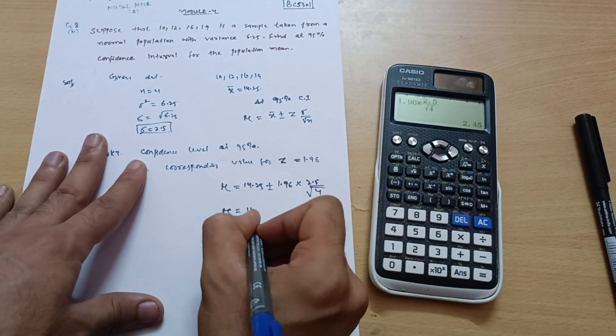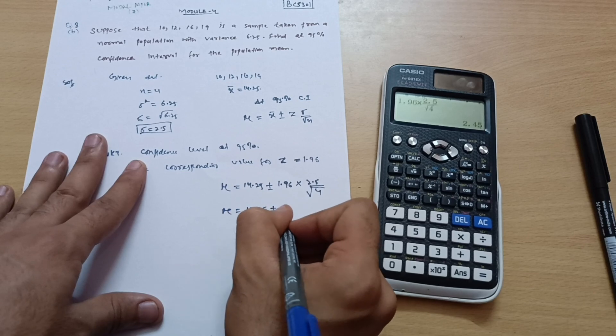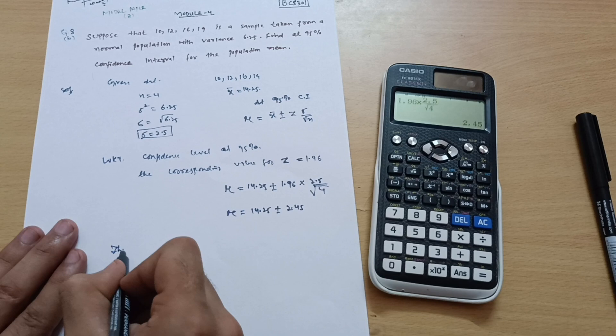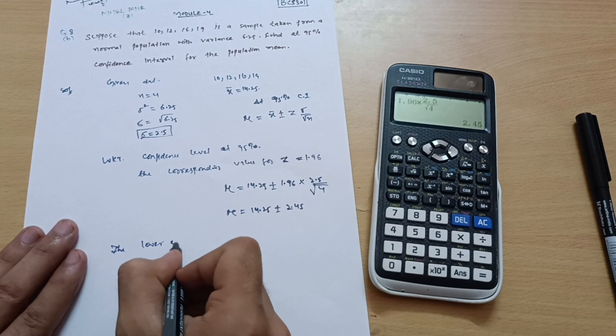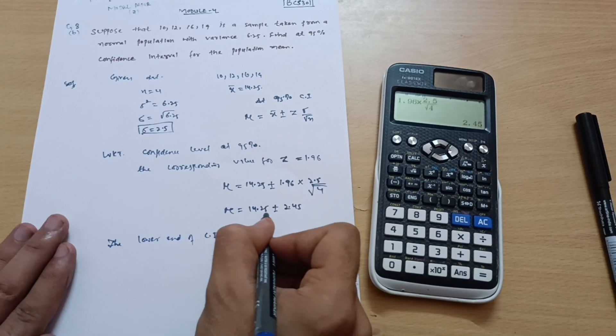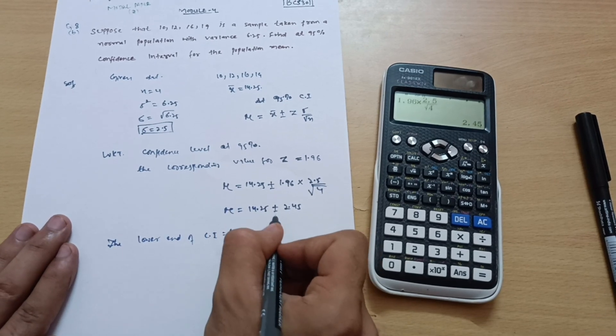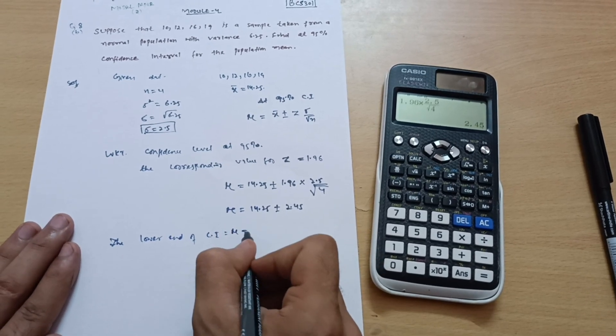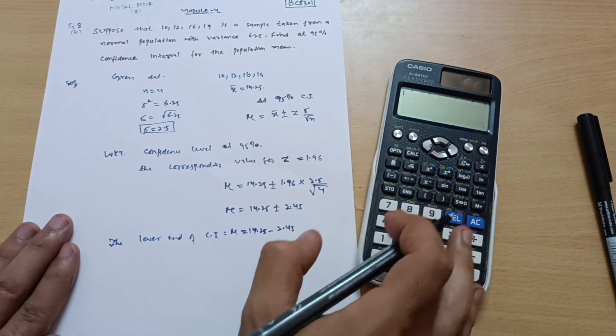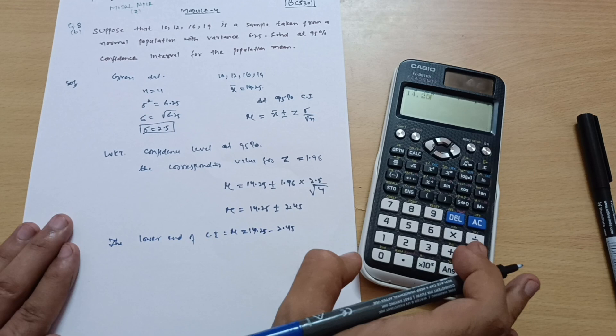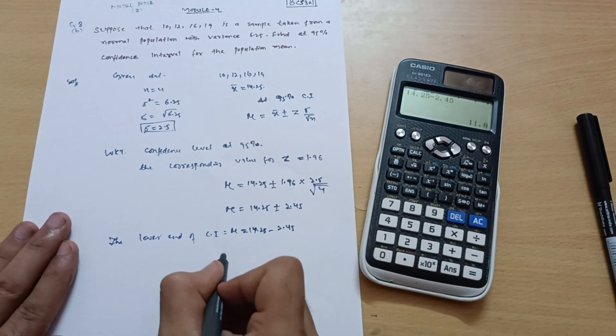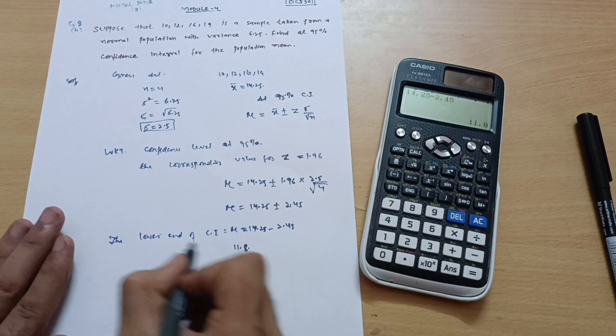So mu is equal to 14.25 plus minus 2.45. So what we are taking? The lower end of the confidence interval. So I can take the lower end of confidence interval. Mu is equal to first of all you should subtract one. These are the two values, plus minus. First take the minus value, that is your 14.25 minus 2.45.